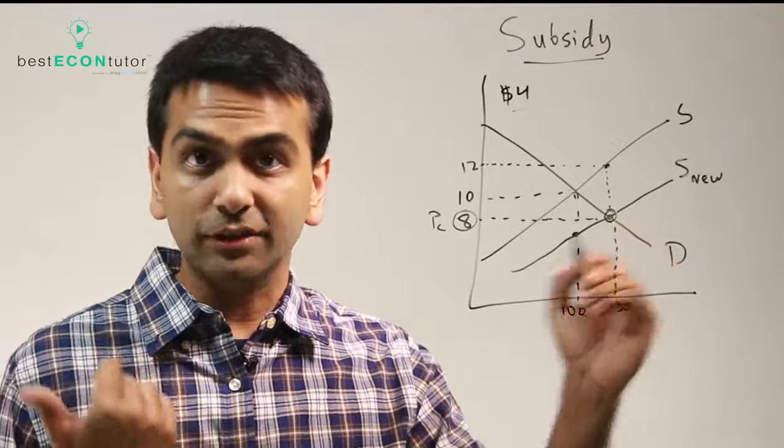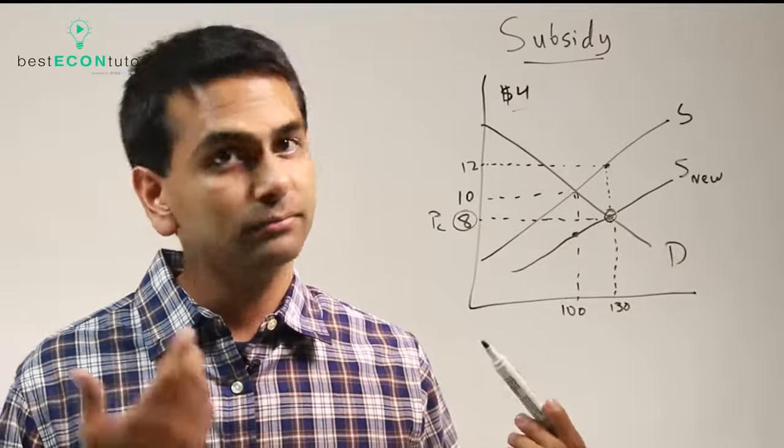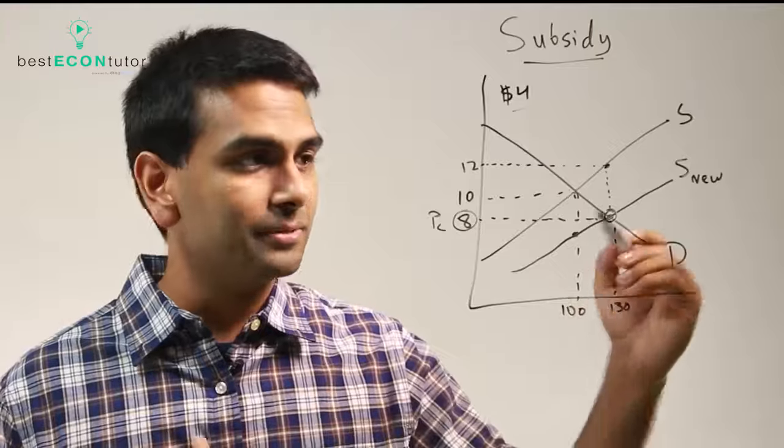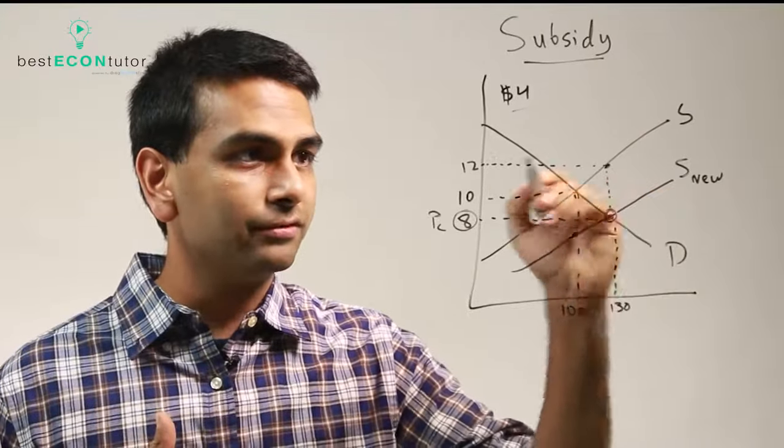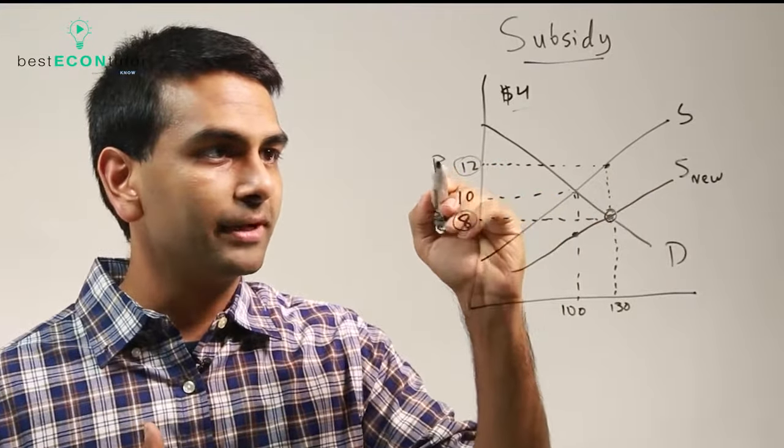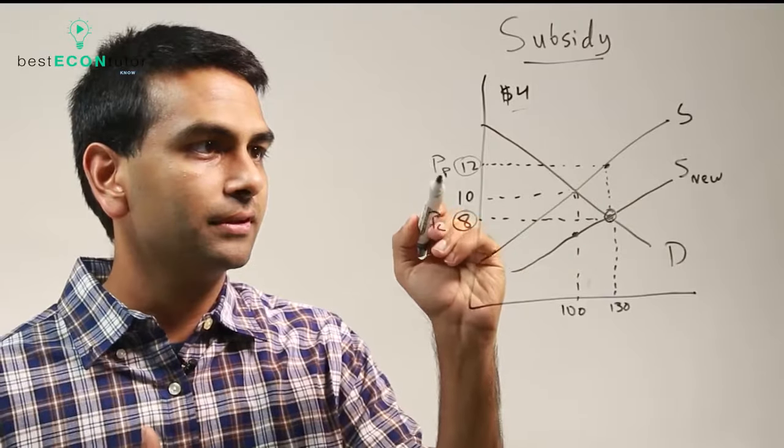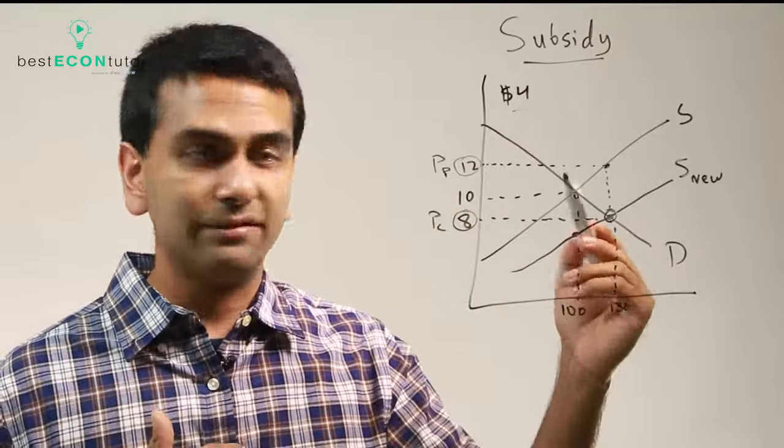But the producers—they're getting only eight from their customers now, but they're also getting four from the government. Eight plus four is twelve. That's the producer's price. The price for the producers is twelve dollars instead of ten.